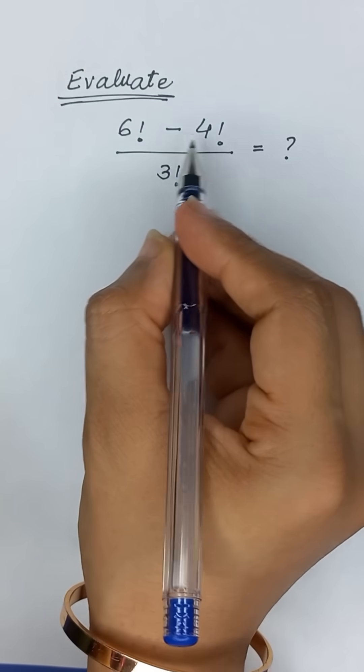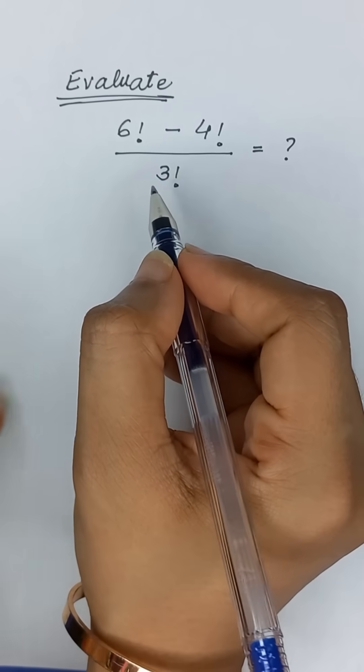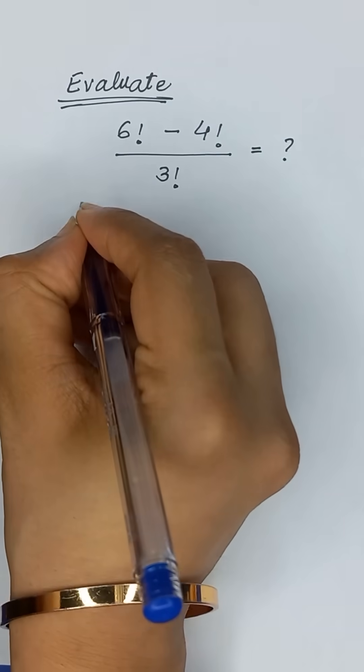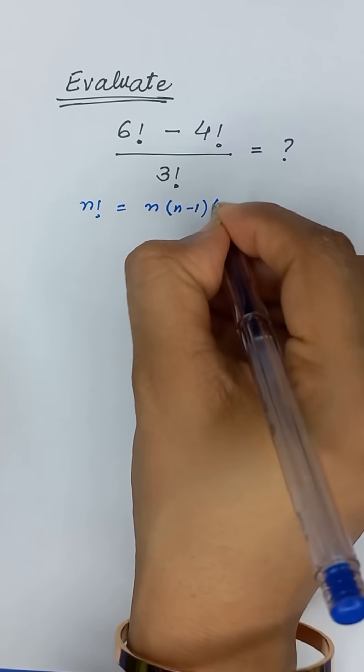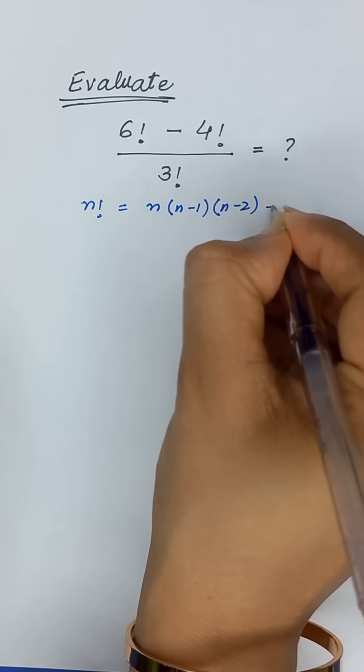Evaluate 6 factorial minus 4 factorial divided by 3 factorial. As we know that n factorial is equal to n times n minus 1 times n minus 2, and so on.